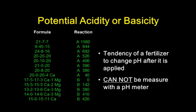If you look at the table on the left, we have the formulas and the reactions. If you take, for example, 21-7-7, that is 1560 pounds acidic. That's the potential acidity of that fertilizer.